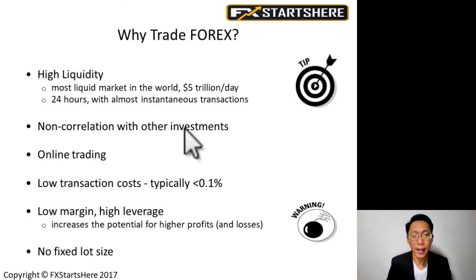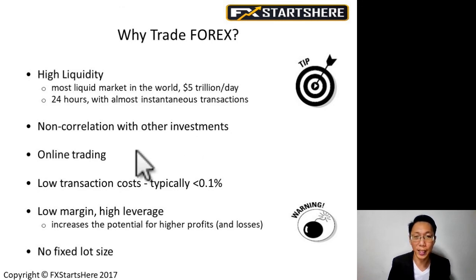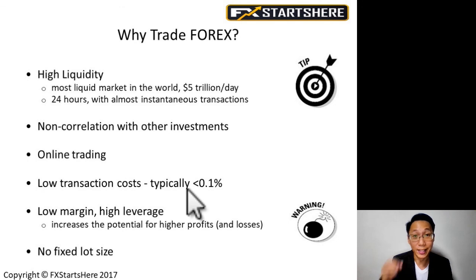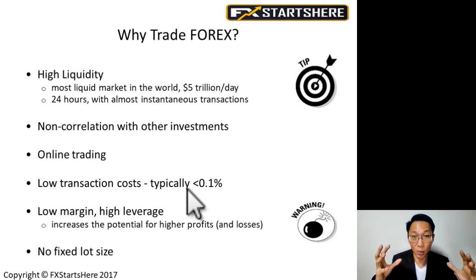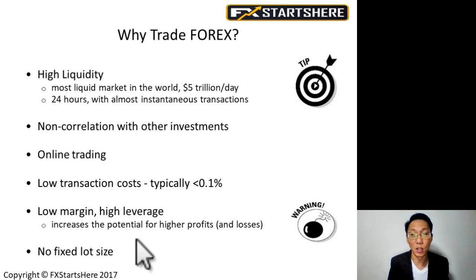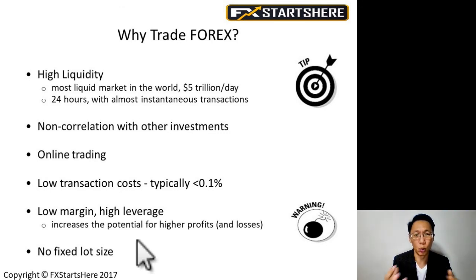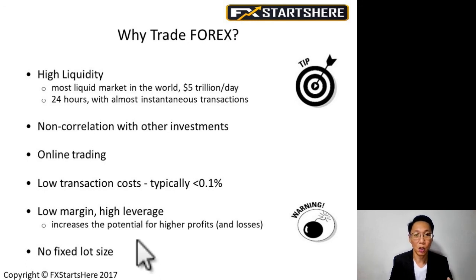Forex is done entirely online. There is a low transaction cost, typically less than 0.1 percent — some brokers even offer zero transaction cost. Forex also features low margin and high leverage, which means the potential to make huge profits, but equally the potential to lose quite a bit of money. Finally, there is no fixed lot size: unlike stocks where you buy one, two, or three lots, in currencies you can buy 1.4 lots, 10.7 lots, or 0.3 lots — whatever suits you.